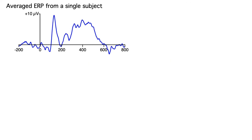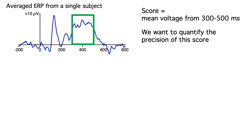Here's an example of an average ERP waveform from a single subject in an oddball paradigm. Imagine you wanted to measure the P3 wave as the mean voltage between 300 and 500 milliseconds. That's our score for this experiment, and we want to quantify the quality of this score.